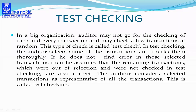Now talking about test checking. In a big organization, an auditor may not go for checking of each and every transaction, and may check a few transactions at random. This type of check is called test checking. In test checking, the auditor selects some of the transactions and checks them thoroughly, taking them as samples out of the whole transactions.